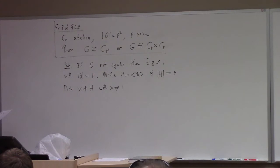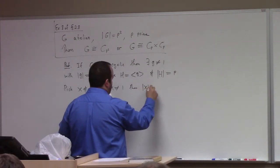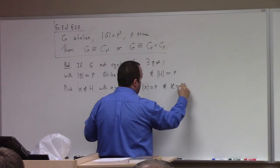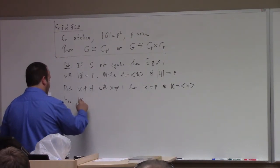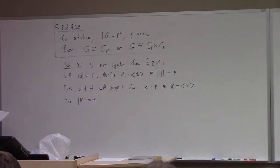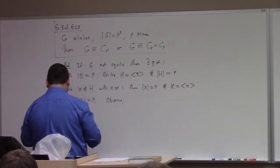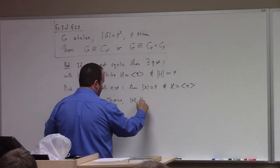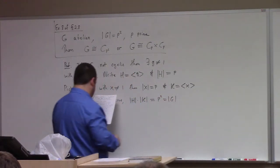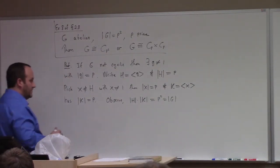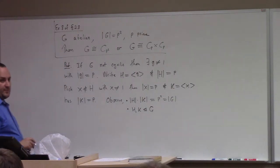Then, of course, the order of x must also be p. And if we say K is equal to the cyclic subgroup generated by x, the order of K is also equal to p. So you can count. Observe the order of H times the order of K is equal to p times p, which is the order of G. We also know that H and K are normal subgroups of G because G is abelian — every subgroup is normal in an abelian group.